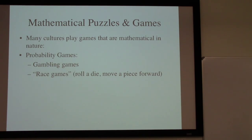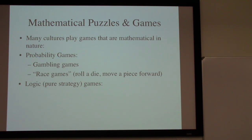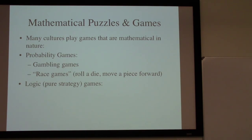Those games necessarily involve the randomness from whatever is playing the role of the dice. Another style of mathematical games are the logic games — those that just involve logical thinking, a pure strategy game. All of the rules are known to us. There's no randomness. We just have to be able to think our way through them. That concept of analyzing the logic of a particular situation is something we think of as a mathematical form of thinking.